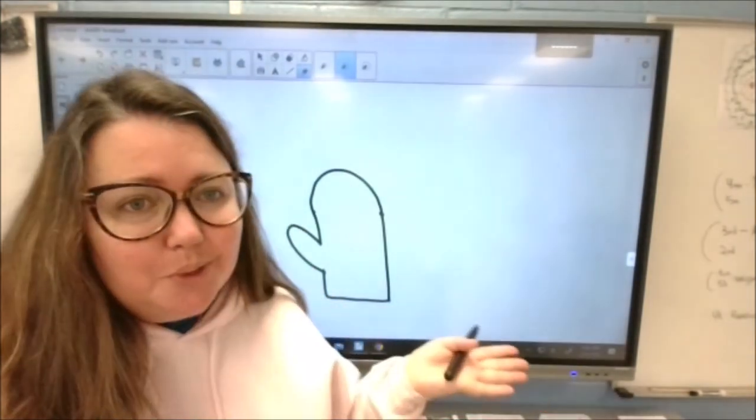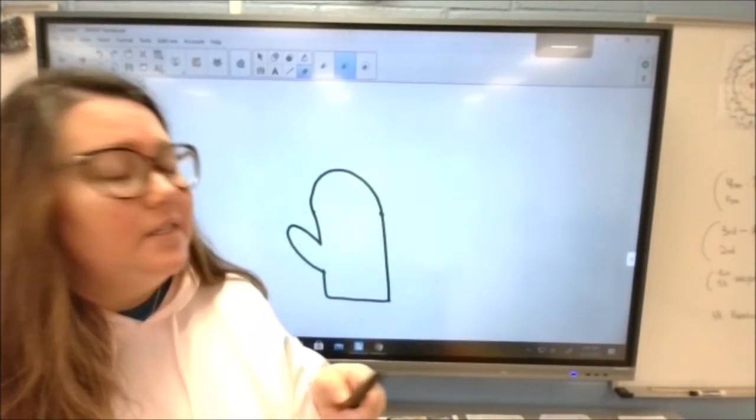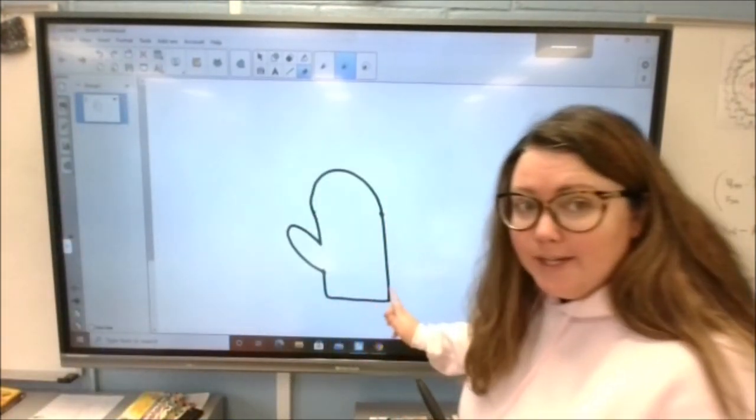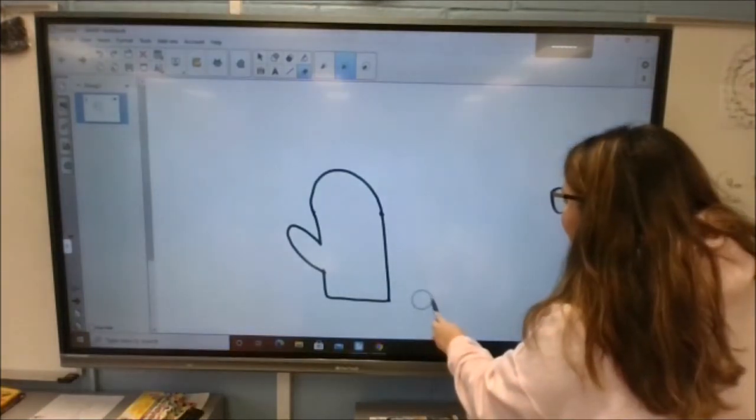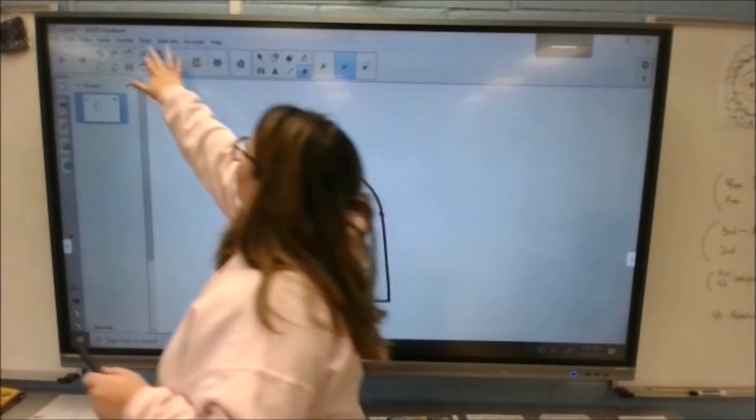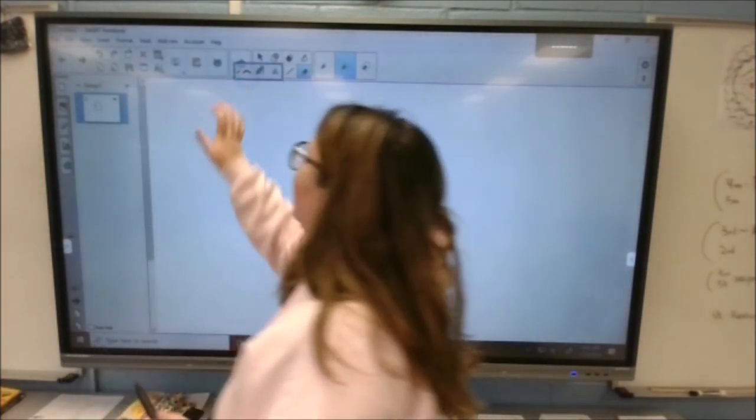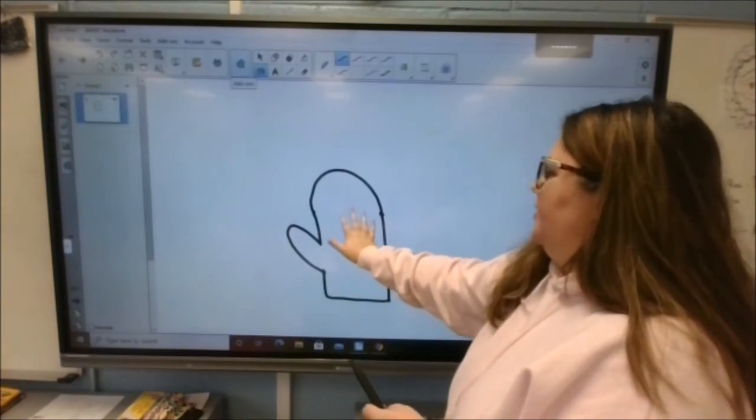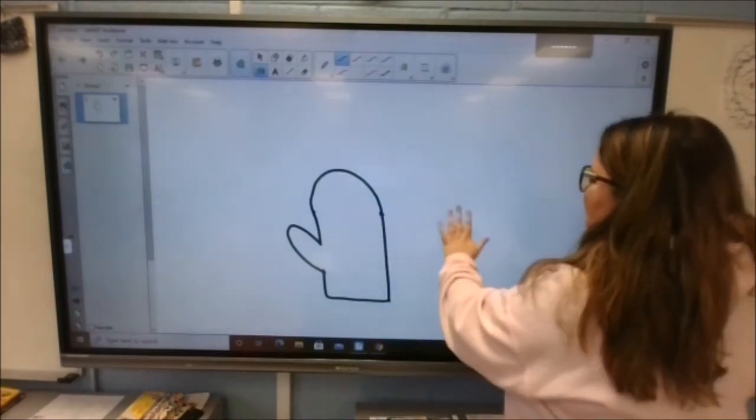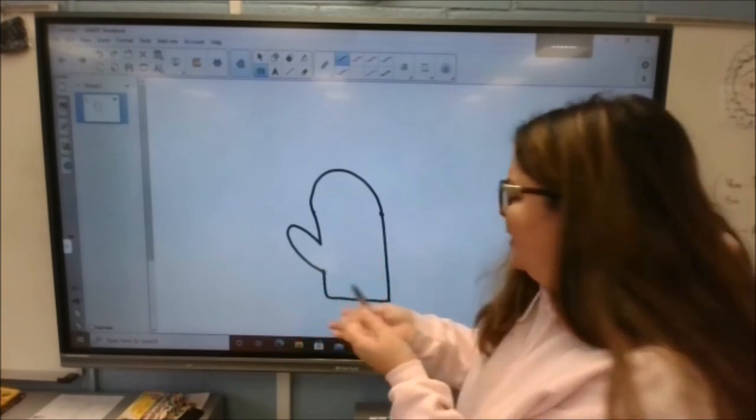Now for this project, you really only have to draw one. But if you wanted to draw a second mitten, a pair of mittens, you could. So I'm going to show you how I would draw a pair. So this would be for my right hand and I'm going to do this one for my left hand. I put them kind of backwards. That's okay.